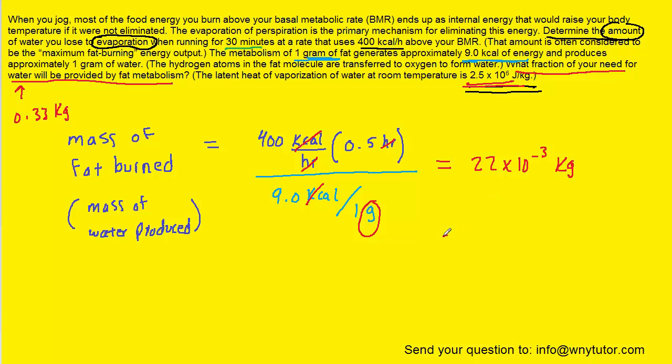In essence, we have to take the 22 times 10 to the minus 3 kilograms of fat burned and divide it by our total need for water, which was 0.33 kilograms. And this will give us our fraction.